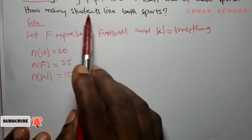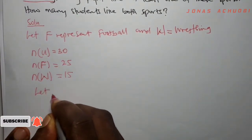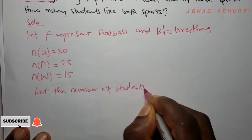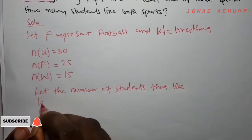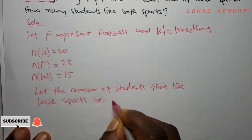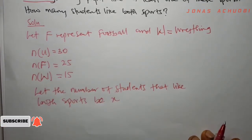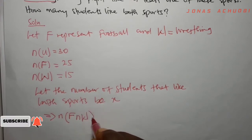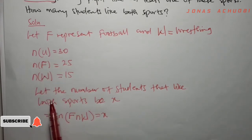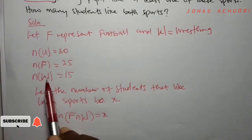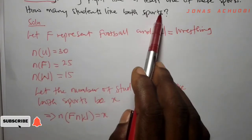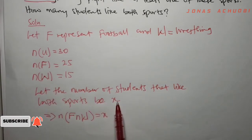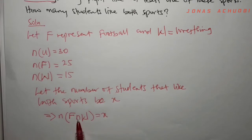We are asked to determine how many students like both sports. Let the number of students that like both sports be X, since we don't know how many there are. This means the number of students in the intersection of set F and set W equals X, because X students can be found in set F as well as set W.